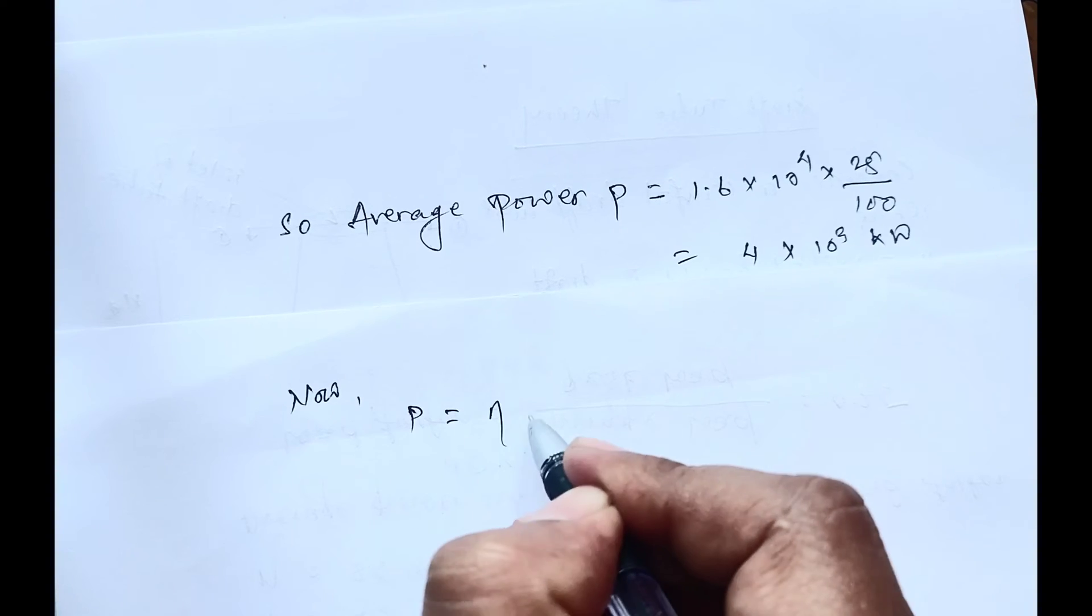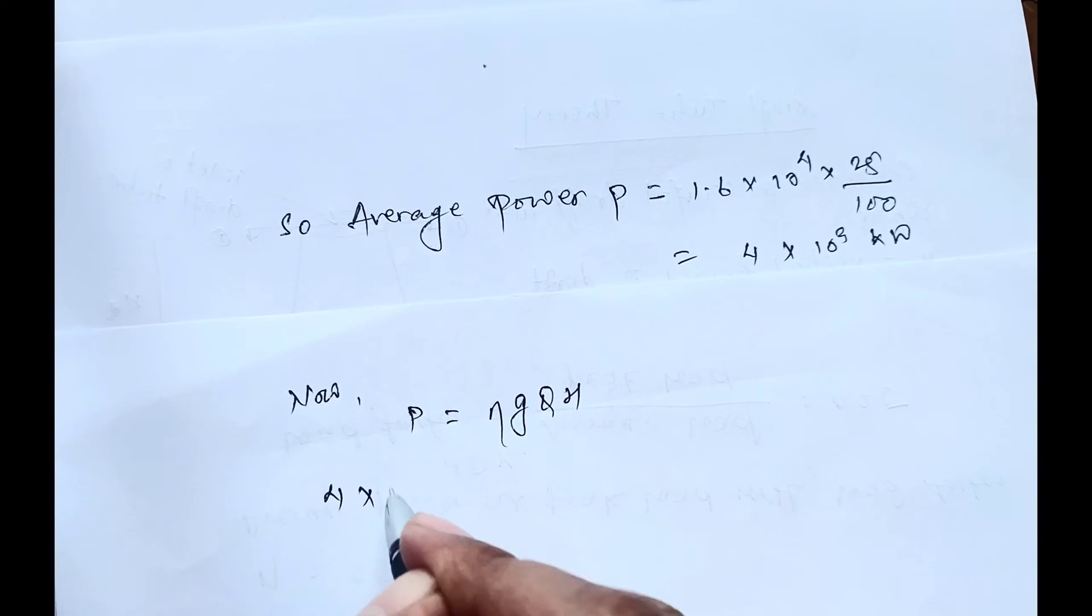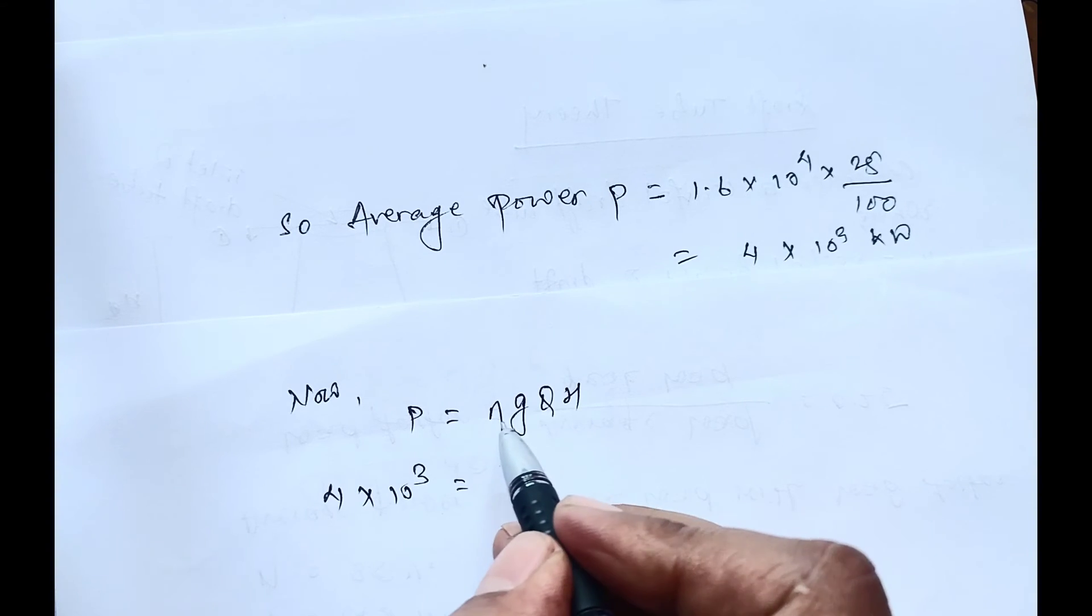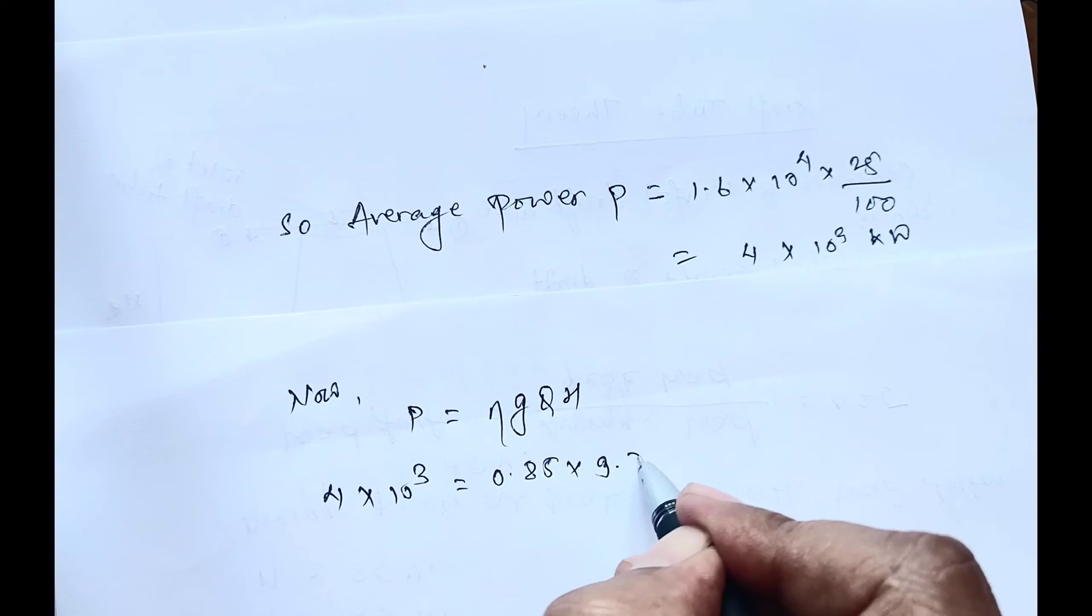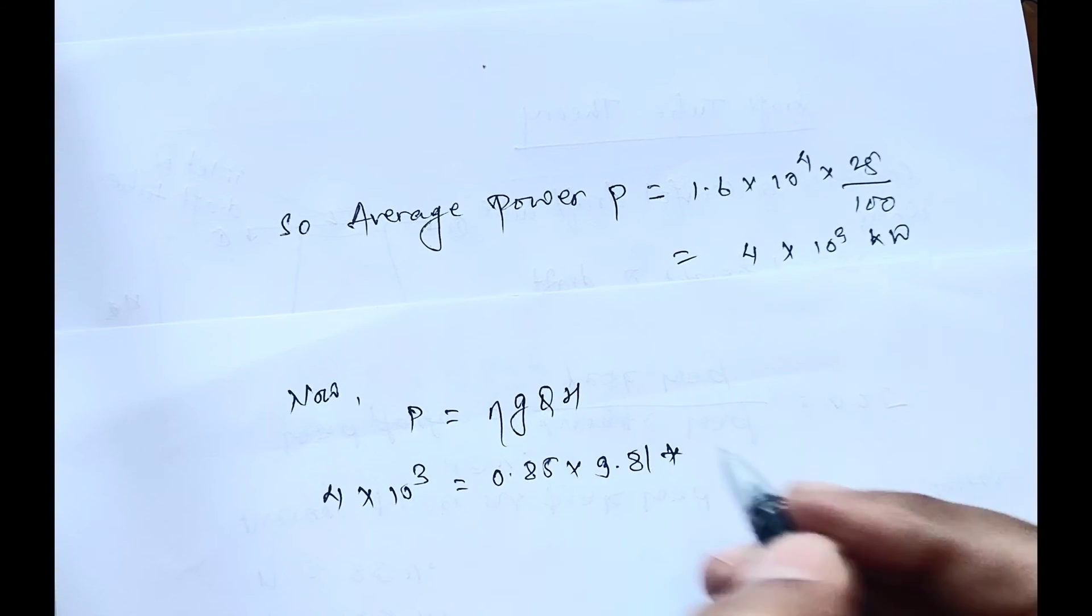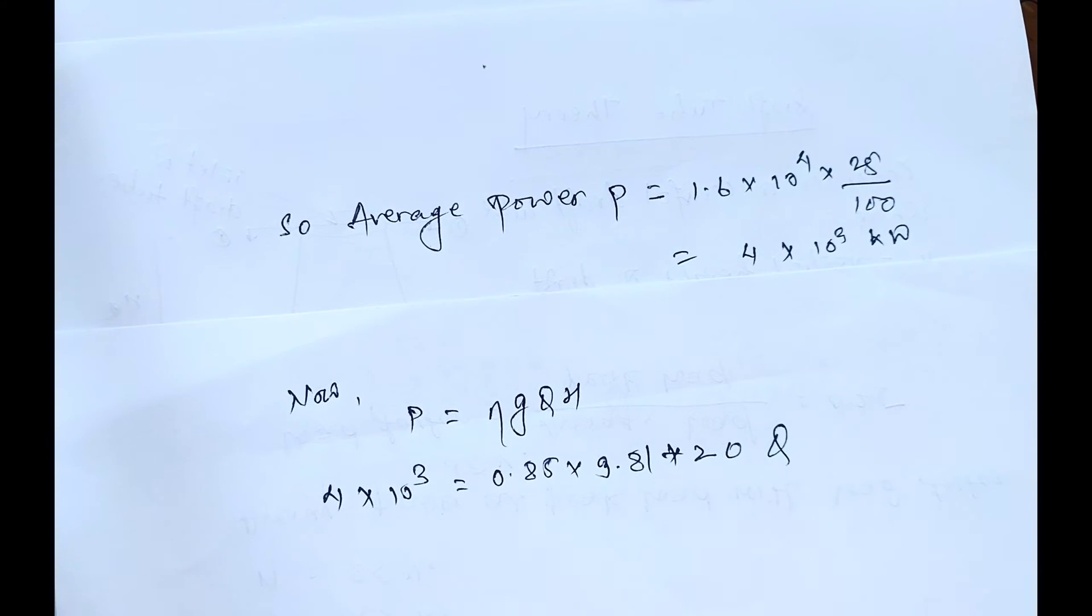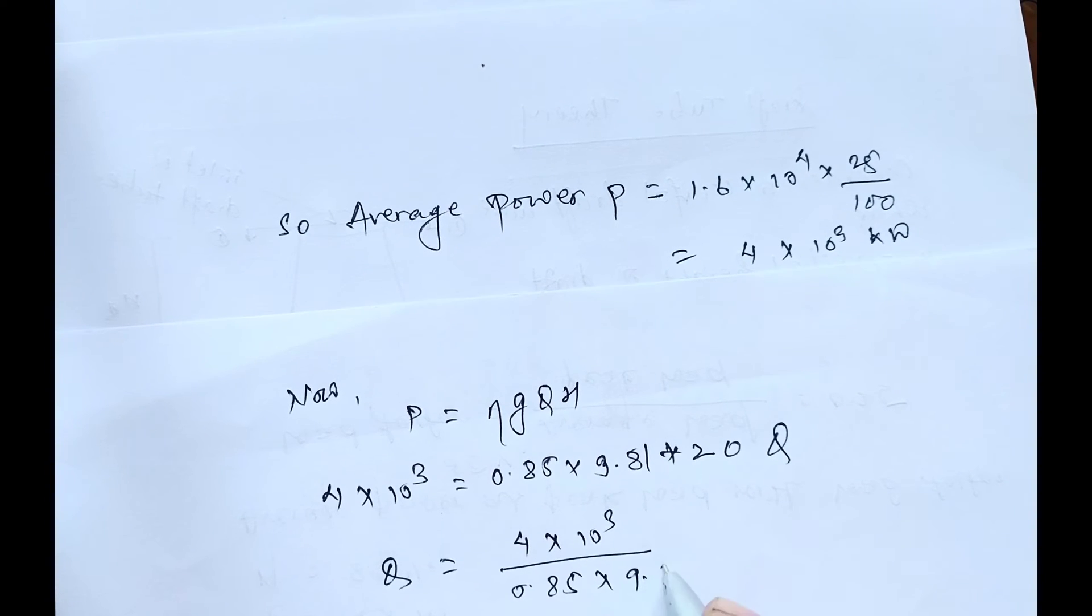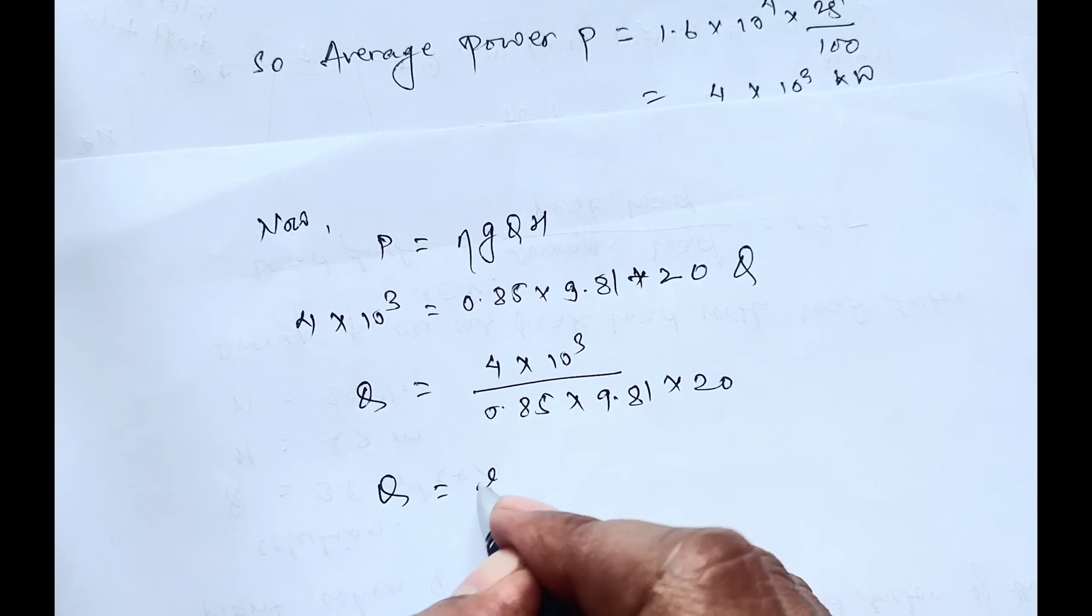Now for the calculation of discharge, Q equals P divided by efficiency times g times H. Power is 4 × 10³, efficiency is 0.85, g (acceleration due to gravity) is 9.81, and H equals 20 meters. So Q equals 4 × 10³ divided by 0.85 × 9.81 × 20. On solving this, the value of Q will be 23.985 m³/s.